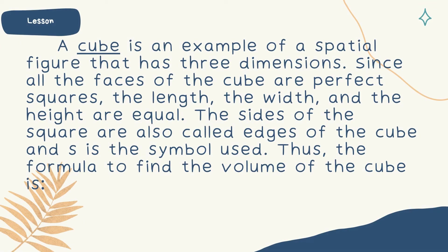How about if it is a cube? A cube is also an example of a special figure that has three dimensions. Ano ang pagkakaiba ni cube kay rectangular prism? So cube, as we all know, the faces of the cube are perfect squares. The length, the width, and the height are equal. So the sides of the square are also called edges. And S is the symbol used. Thus, the formula to find the volume of the cube is V equals S times S times S, or S cubed. S stands for sides since pare-pareho naman ang sukat. Or pwede din naman natin sabihin V equals E times E times E or E cubed, since E also stands for edge.